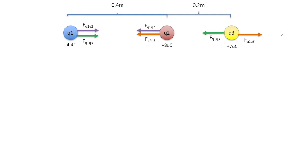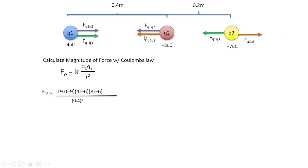Now we can calculate the magnitudes using Coulomb's Law: F = K × Q1 × Q2 / R². For our first force, F_Q1Q2, K is 9 × 10⁹, Q1 is negative 4 microcoulombs (4 × 10⁻⁶), and Q2 is 8 × 10⁻⁶ microcoulombs. The distance between these two is 0.4 meters. Solving, we get 1.8 newtons.